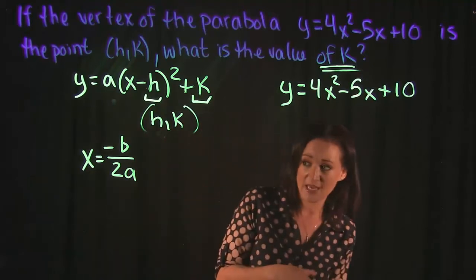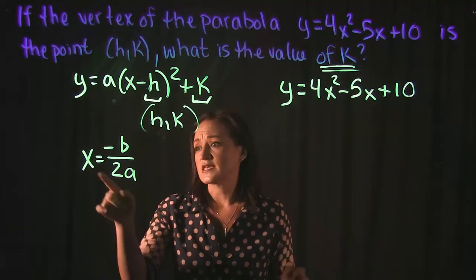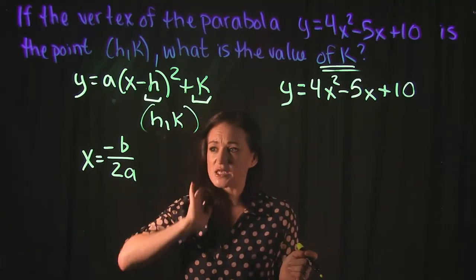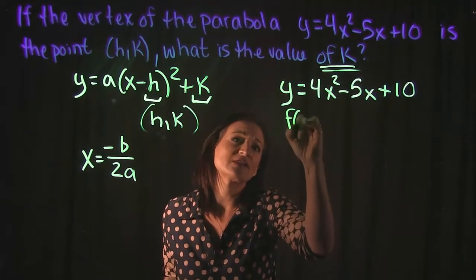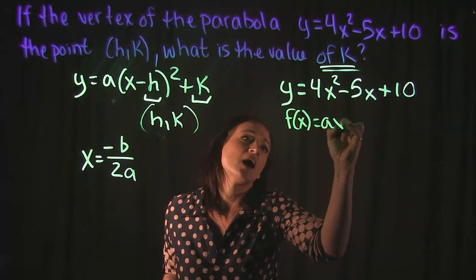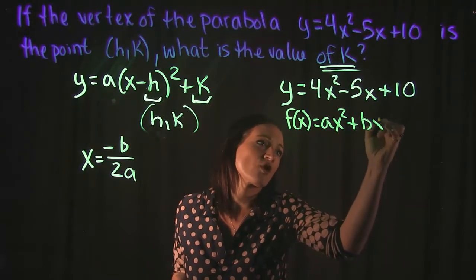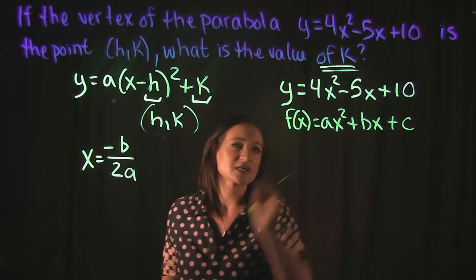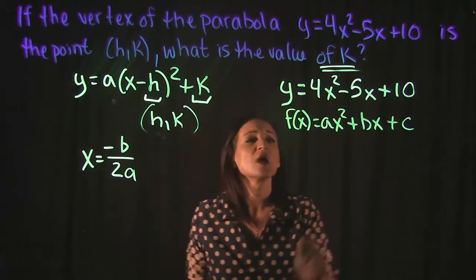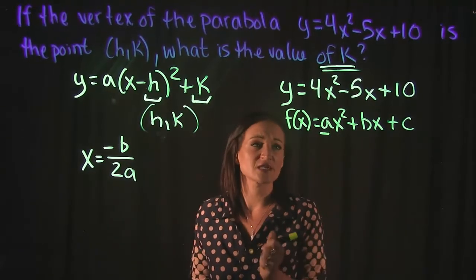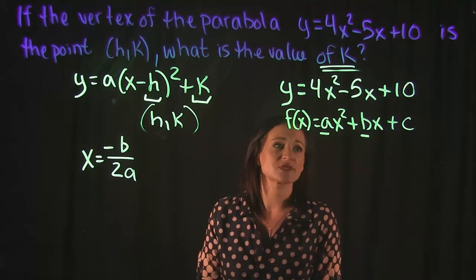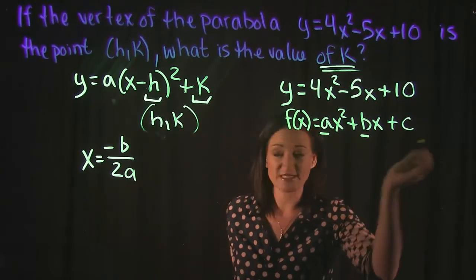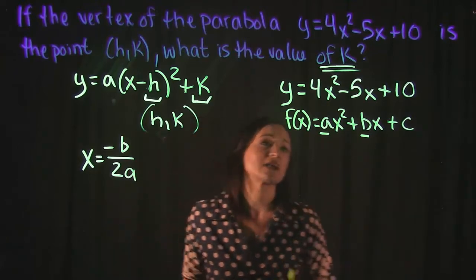This formula, x = -b/2a, comes from the quadratic form of an equation: ax² + bx + c, where a is the coefficient of the x² term, b is the coefficient of the x term, and c represents your constant.